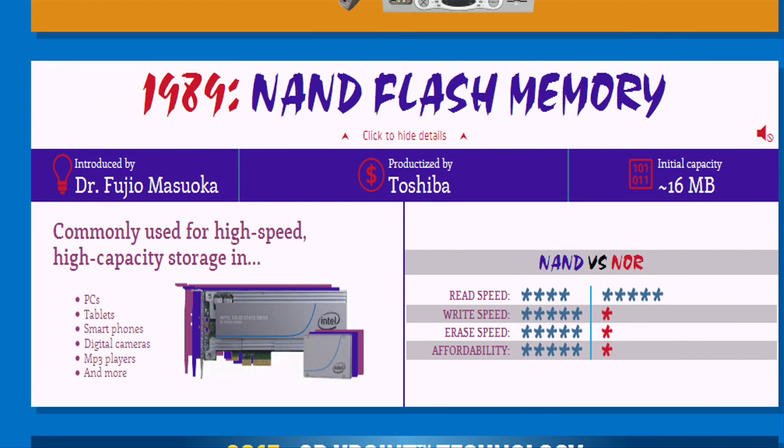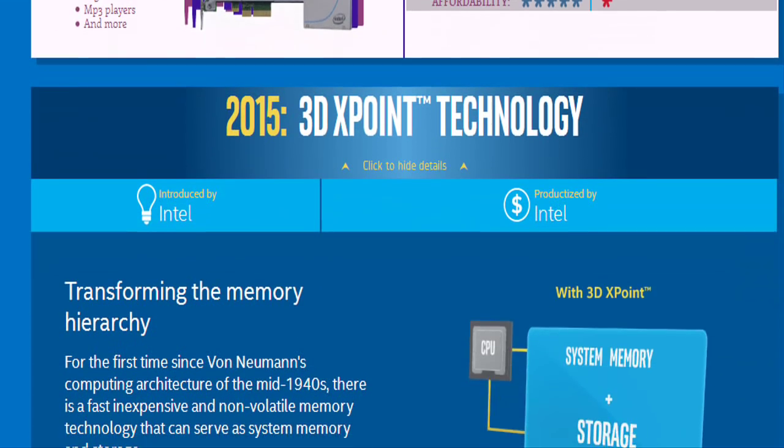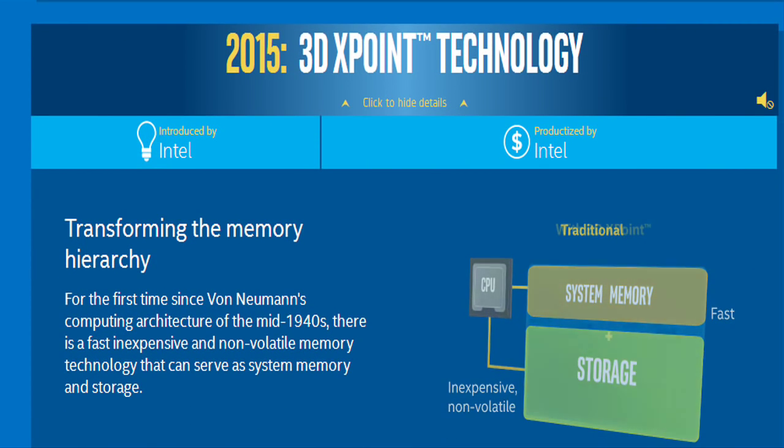The innovative, transistorless crosspoint architecture creates a three-dimensional checkerboard where memory cells sit at the intersection of wirelines and bitlines, allowing the cells to be addressed individually. As a result, data can be written and read in small sizes, leading to faster and more efficient processors.